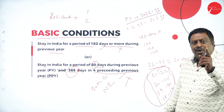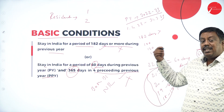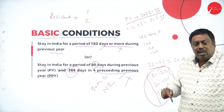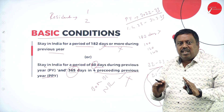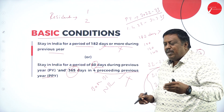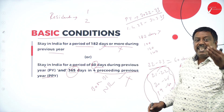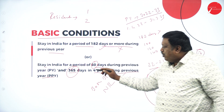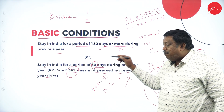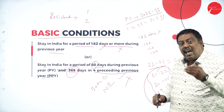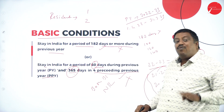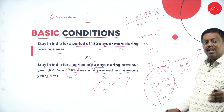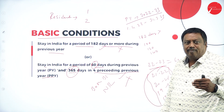If I satisfy any one of the basic conditions, they're going to call me a resident. My stay in India should be more than 182 days from 1st April 2022 to 31st March 2023 to satisfy the first basic condition. If my stay is less than 182 days, we verify the second basic condition — 60 days during the previous year and 365 days in four preceding previous years — and if satisfied, I will be called a resident as per income tax law, for tax purposes only.